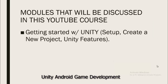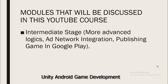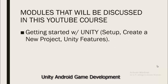In the Unity Android game development course you will get three modules: the first module is Getting Started, then Intermediate Stage, then Advanced Level. In the first module we will introduce you to the Unity 3D engine, how to install it, and how to create the game development environment on your PC or laptop.